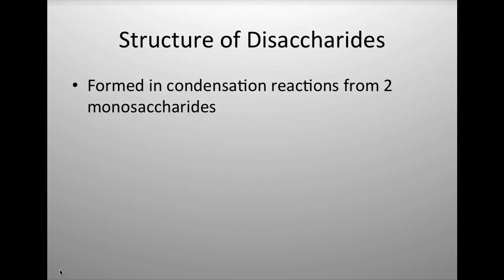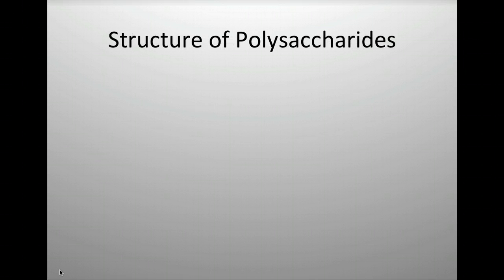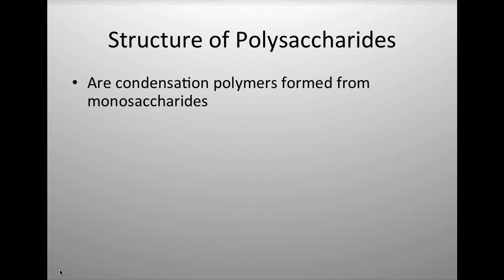A disaccharide is formed in a condensation reaction from two monosaccharides. A condensation reaction is when you take two functional groups, put them together, and a small molecule leaves — in this case water. For IB exams you are usually asked to name at least two or three disaccharides; examples include maltose, lactose, and sucrose.